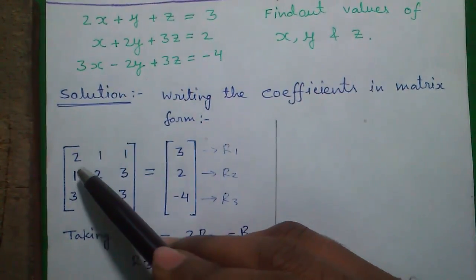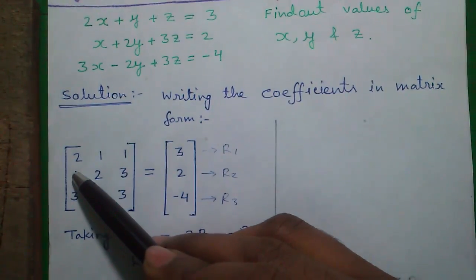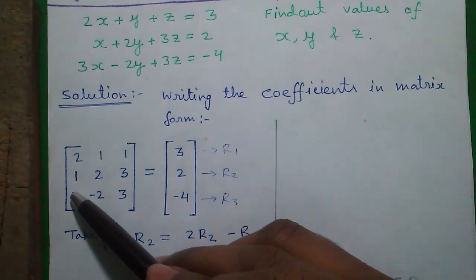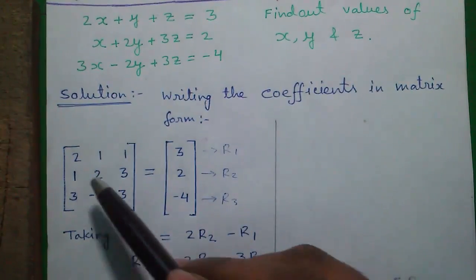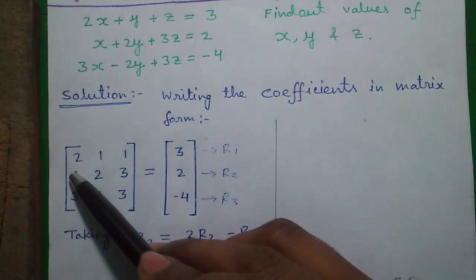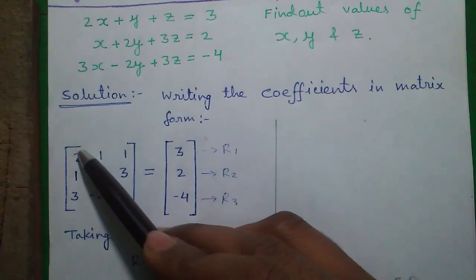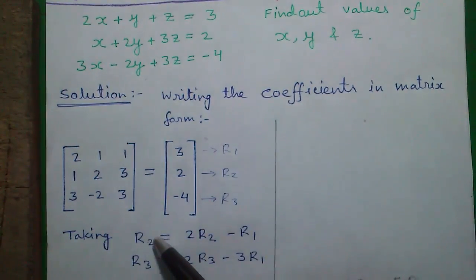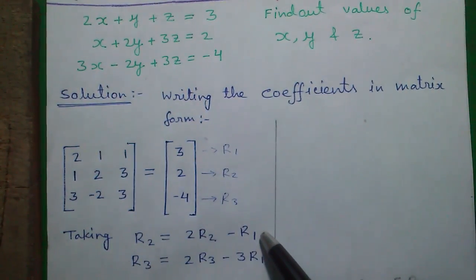Our objective is to bring two zeros, one at this position and one at this position. So for this position, we can multiply R2 by 2 and subtract R1 from that. So R2 equals to 2R2 minus R1.